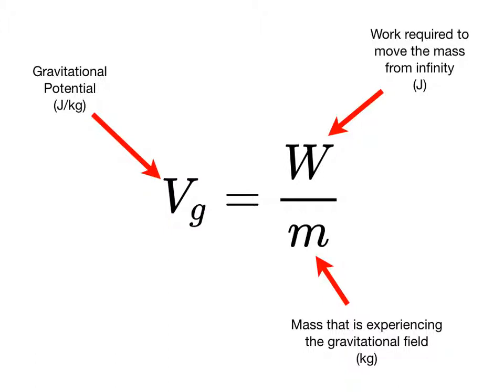So the gravitational potential at a location in space is the amount of work required to move that mass from infinity to the location of interest. So imagine we have some big masses creating a gravitational field. But there's a gravitational field, and we have a smaller mass that we want to move from an infinitely far distance away to a position in space at which we want to calculate the gravitational potential.